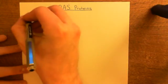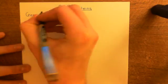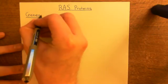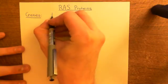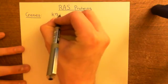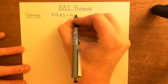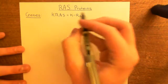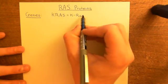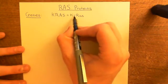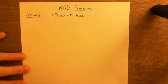We'll start off with the genes for RAS proteins. There are only three genes even though there are four RAS proteins. The three genes are: the KRAS gene — sometimes written as all capitals together, other times written as capital K, then a dash, capital R, and then lowercase A and S. They're both the same.